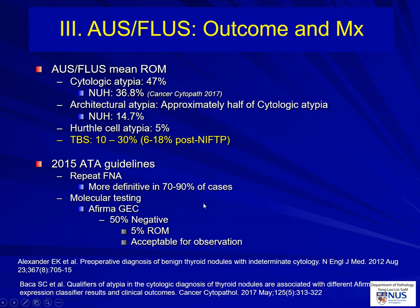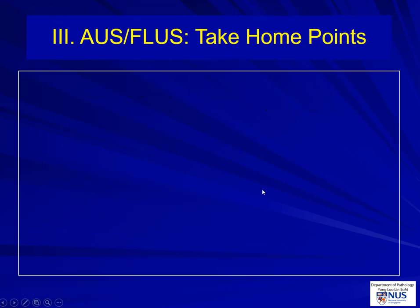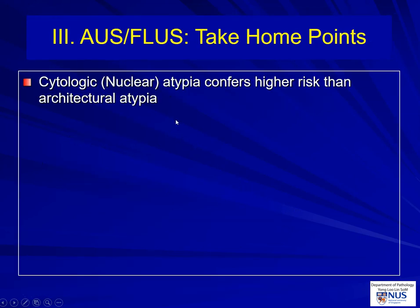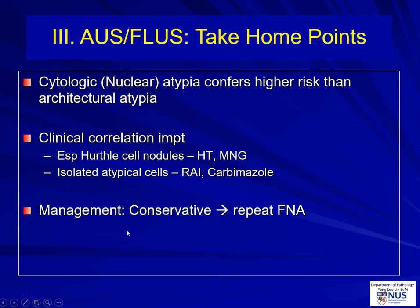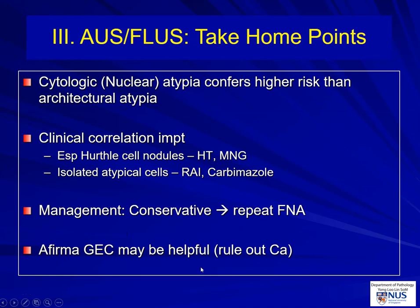One would have to really weigh the cost-benefits of a repeat FNA versus molecular testing. Take-home points for AUS: cytologic or nuclear atypia confers a higher risk of malignancy compared to architectural atypia alone. Clinical correlation is important, especially in the context of Hürthle cell nodules. If there is a background of Hashimoto thyroiditis or multinodular goiter, the risk of malignancy or neoplasia is lower. If you see isolated very bizarrely atypical cells with hyperchromatic nuclei — not the kind we would suspect PTC in — we would consider treatment effect. Management is repeat FNA or molecular testing if available.